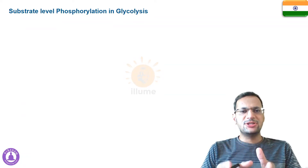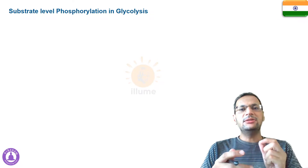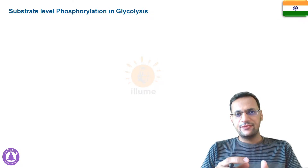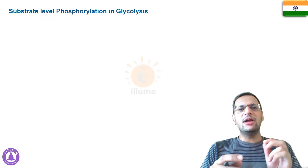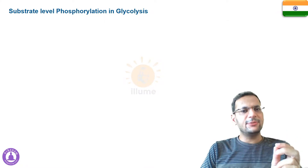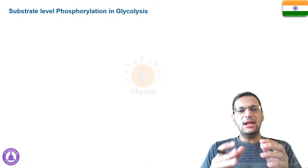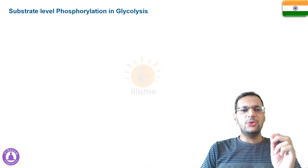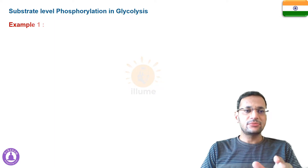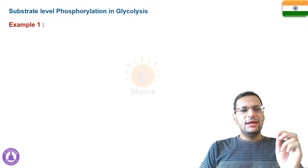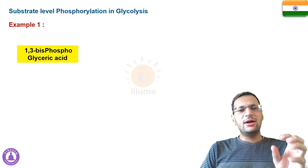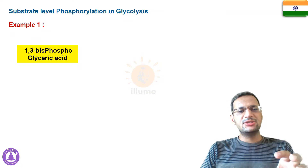Now let's consider the examples of substrate level phosphorylation in the entire respiration pathway. There are three examples of SLP: two are from glycolysis and one is from the Krebs cycle. I'll discuss the two glycolysis examples first.